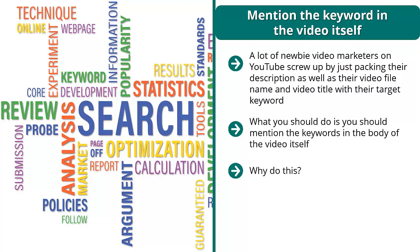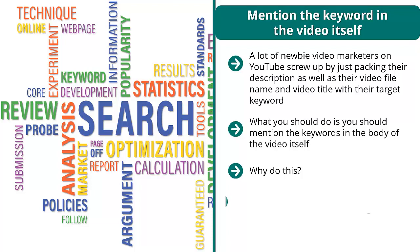Does Google even know? Well, it does. Because when you upload a video on YouTube, it automatically transcribes it after a few hours. You upload a video and then after a few hours there will be a transcription. You're out of luck when the transcription is in another language — sometimes Google's algorithm does this — but oftentimes it's in English. With this transcription, Google can determine whether your video actually talks about the keywords that you put in your description, title, or file name.